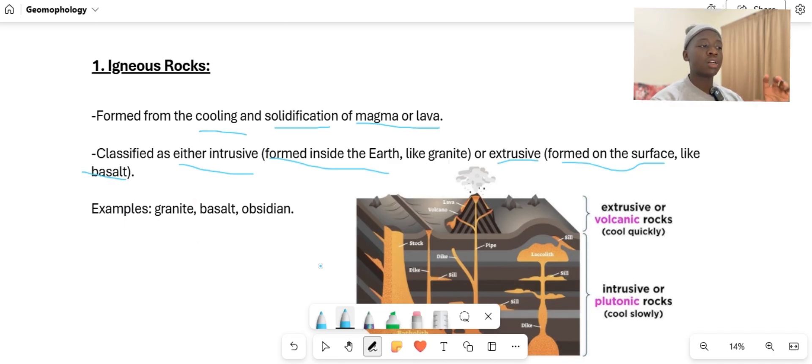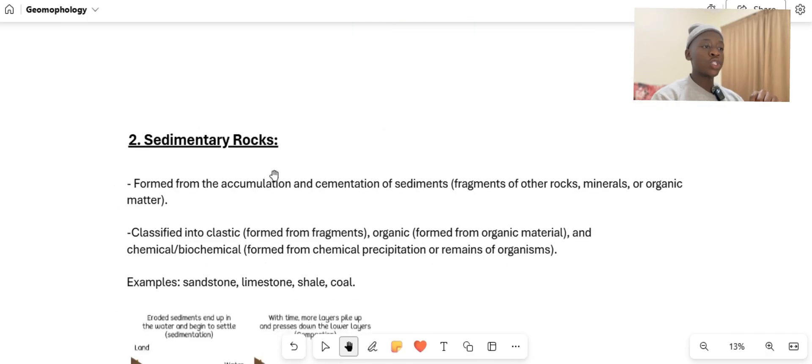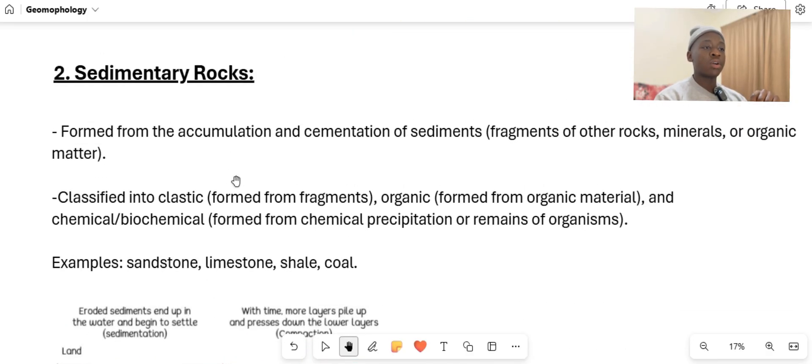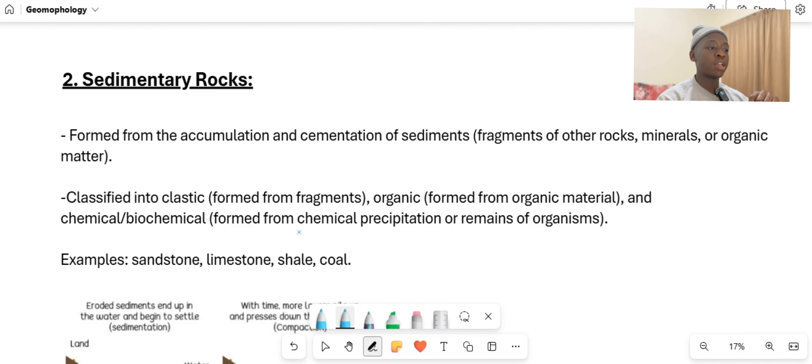We move to what we call sedimentary rock. Sedimentary rock is a type of rock that is formed by a particular process of accumulation. Accumulation just means actually accumulating things, collecting things and putting them in one place. Sedimentary rocks are formed from the accumulation and cementation of sediment, which is like fragments of other rocks, minerals, or organic matter.